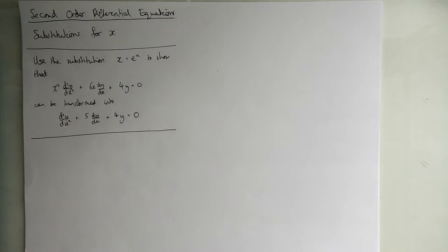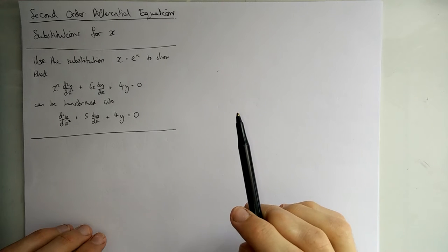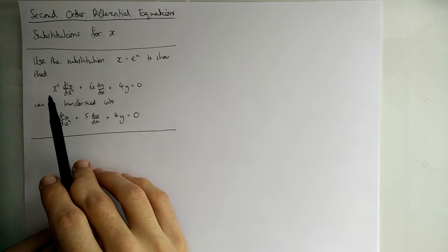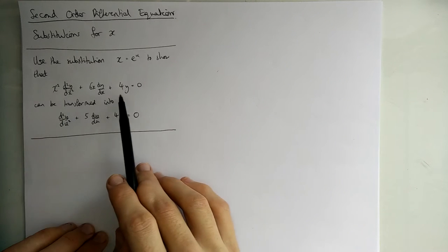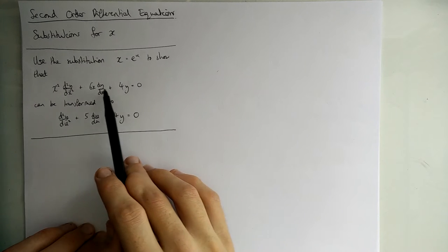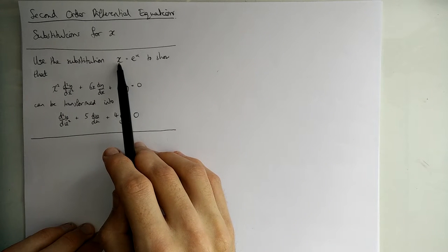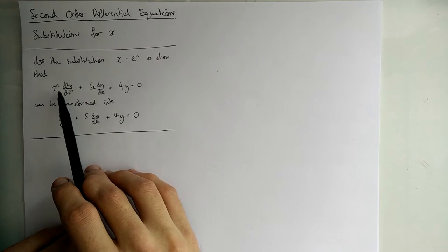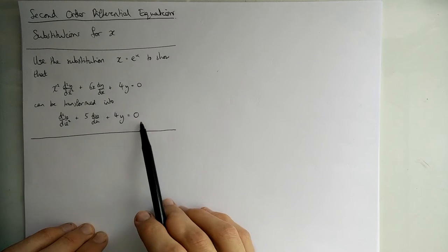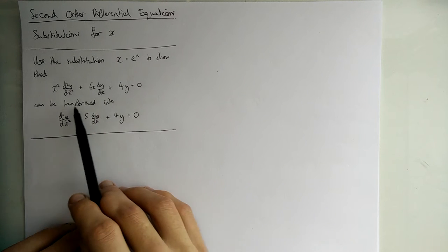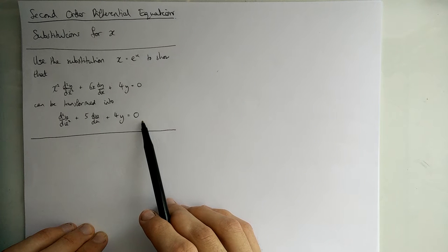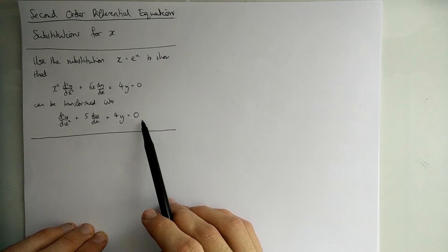Okay, so this is a second order differential equations video on substitutions for x. The idea is that you're given a substitution and then given a ridiculously horrible equation like this one here, something we can't solve. But by replacing all the x's with u's, we can turn this into a much nicer form, one that we can solve. And that's good, I suppose.